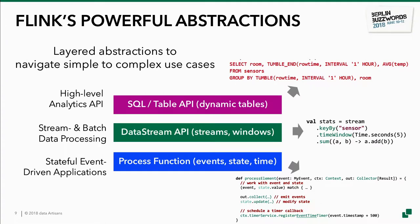Flink has a couple of programming APIs that are layered. You can start at the bottom with the process function level, which is an interface that gives you access to control time and state — the basic building blocks for streaming applications. On top of that is the DataStream API, which gives you nice shortcuts for very common stream processing operations like windows and asynchronous calls against external data stores. And finally on top there are the high-level APIs for streaming analytics: SQL and the Table API, which is what this talk is about.